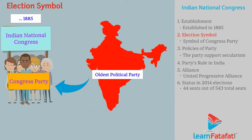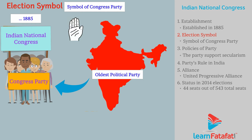Election Symbol. The symbol of the Congress Party is an image of a right hand with its palm facing towards the front side and its fingers pressed together. This symbol is usually shown at the center of an Indian tricolor flag.